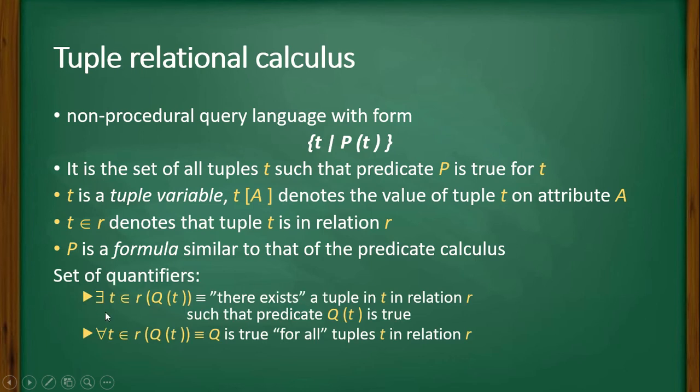Now, set quantifiers: There exists t belongs to r, Q(t), that means there exists a tuple t in relation